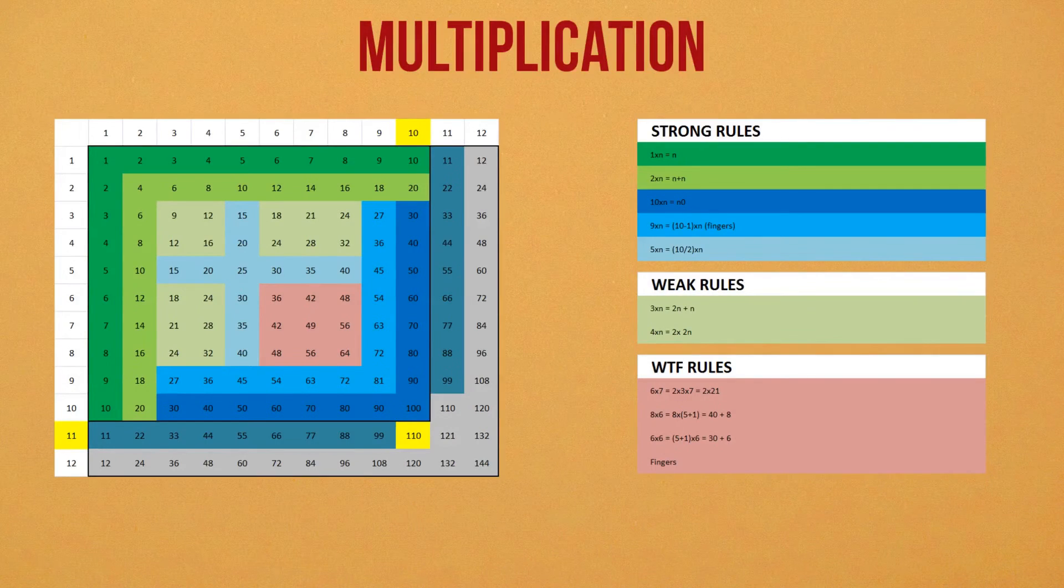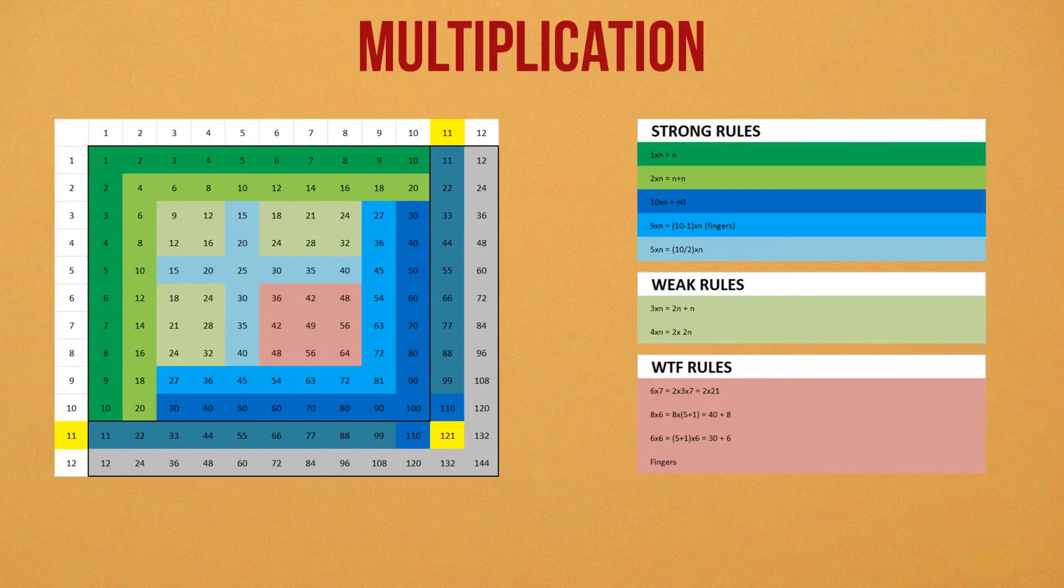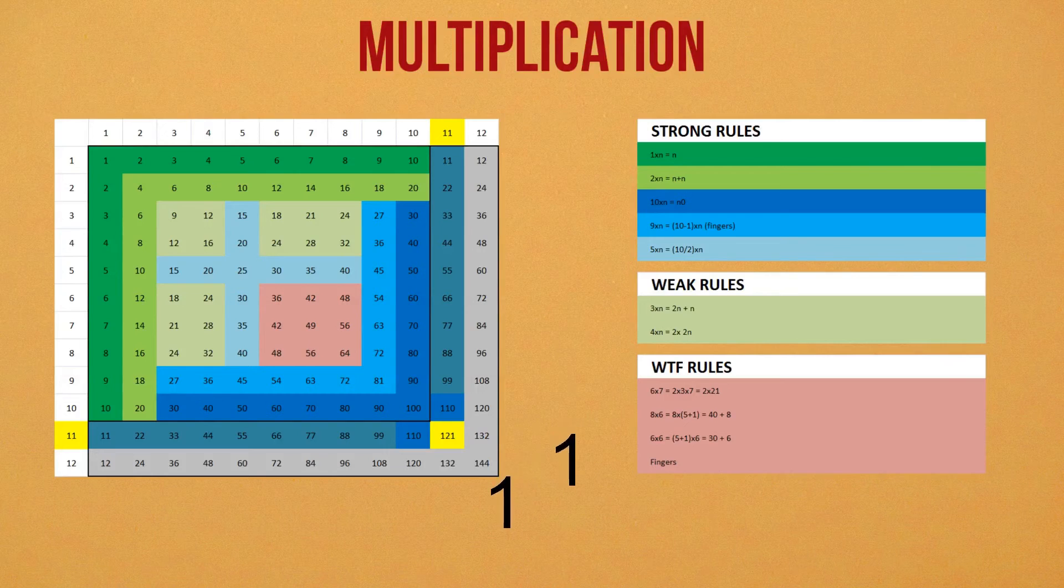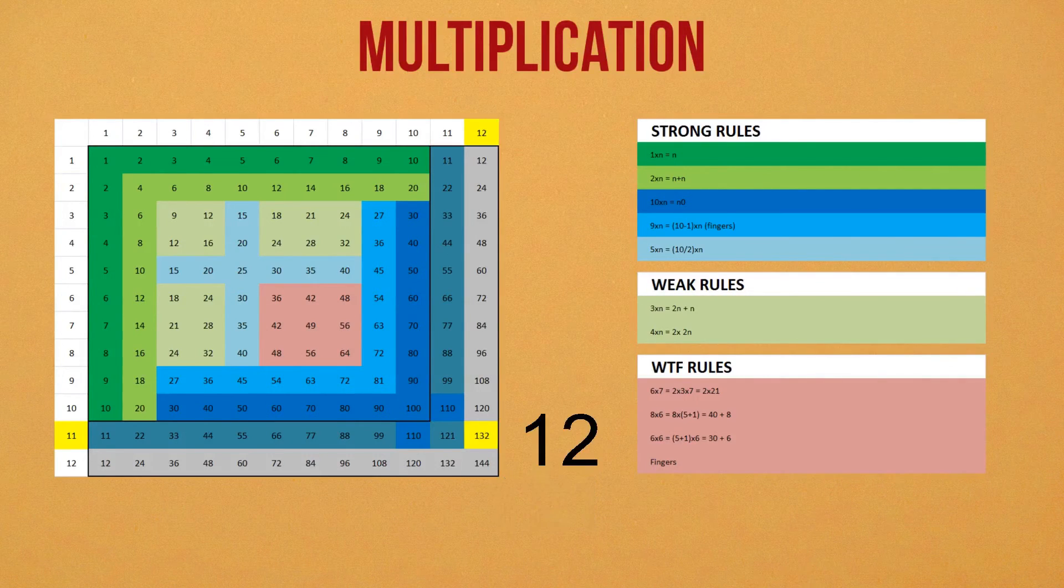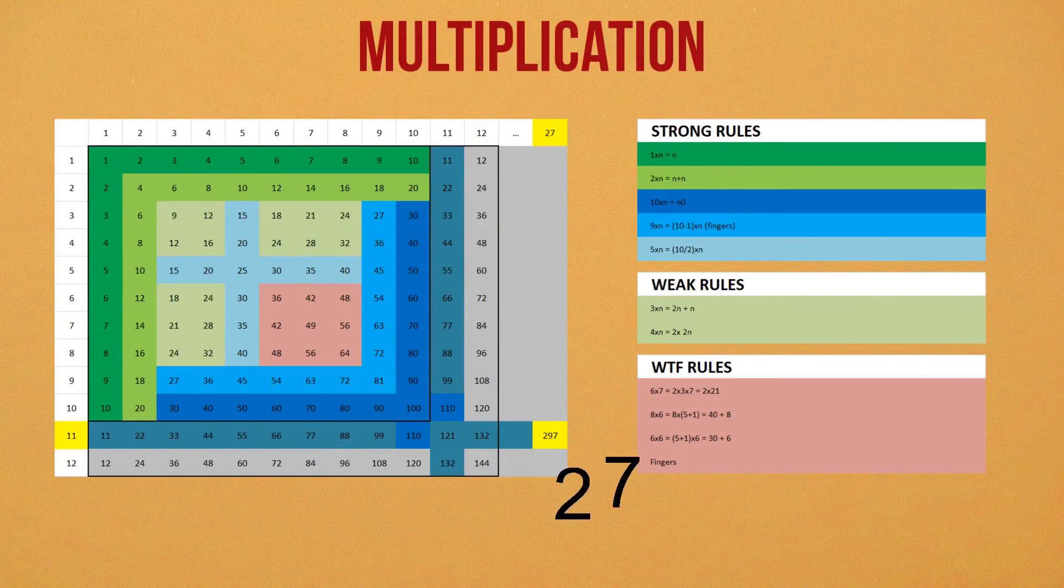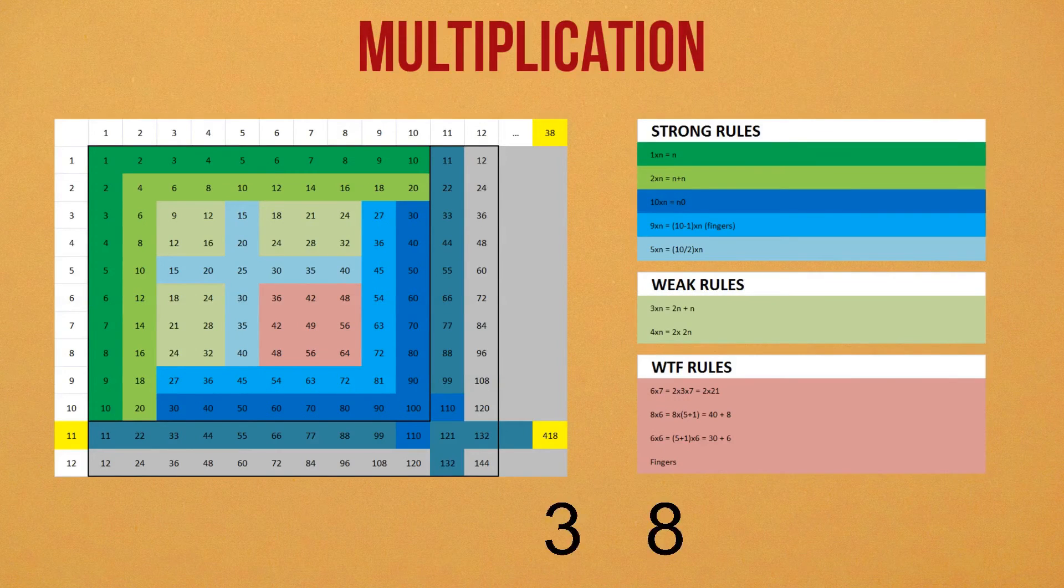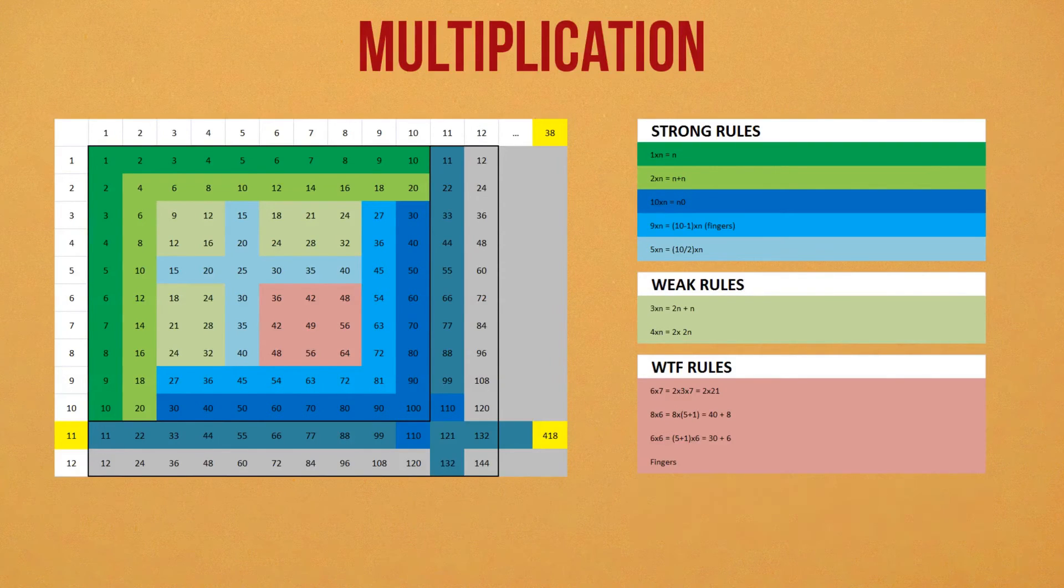Now, for 11 times anything bigger than 10, there's a neat trick you can use. You can just drop the 10s digit to the left, drop the 1s digit to the right, and do the sum of both in the middle. So for 11 times 11, we drop a 1 to the left, drop the other 1 to the right, and we do 1 plus 1 to get 2 in the middle. So 11 times 11 is 121. You can use this trick to multiply any 2 digit number by 11. For 11 times 27, we drop the 2 to the left, the 7 to the right, and do 2 plus 7 in the middle to get 297. Sometimes there's carrying involved. For 11 times 38, we would do 3 on the left, 8 on the right, and 11 in the middle. So after carrying, the answer becomes 418. Anyway, in school, they only make you learn the 12 times 12 table at most, so at this point, we're just showing off.